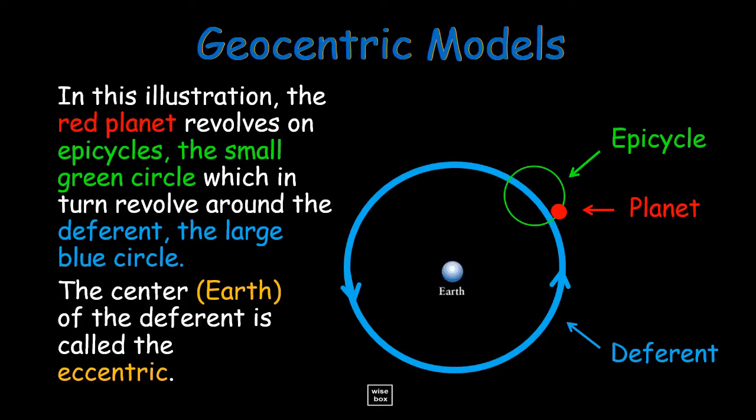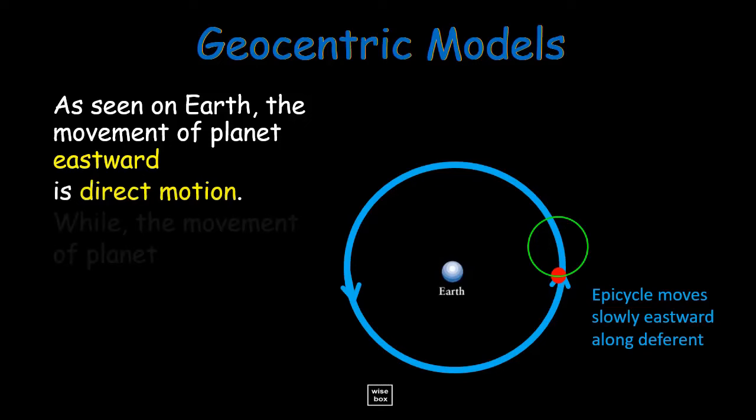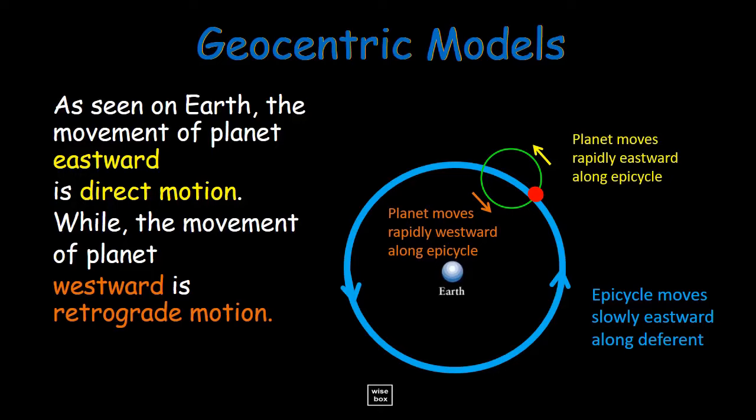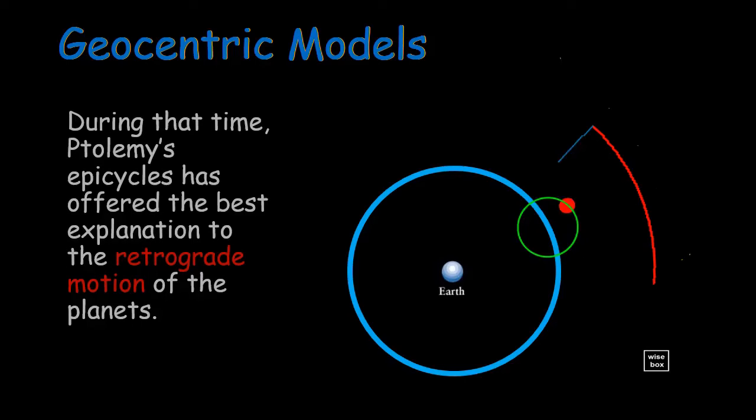As seen on Earth, the movement of planet eastward is direct motion, while the movement of planet westward is retrograde motion. Notice here, the epicycle moves slowly eastward and the planet moves rapidly eastward. Then later as it moves along the epicycle, it moves rapidly westward. During that time, Ptolemy's epicycles has offered the best explanation to the retrograde motion of the planets.